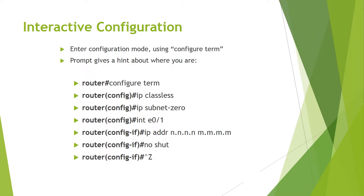Router(config)# ip classless. Router(config)# ip subnet-zero. Router(config)# interface ethernet 0/1. Router(config-if)# ip address and subnet mask. Router(config-if)# no shutdown command, and then save the configuration by pressing Z.